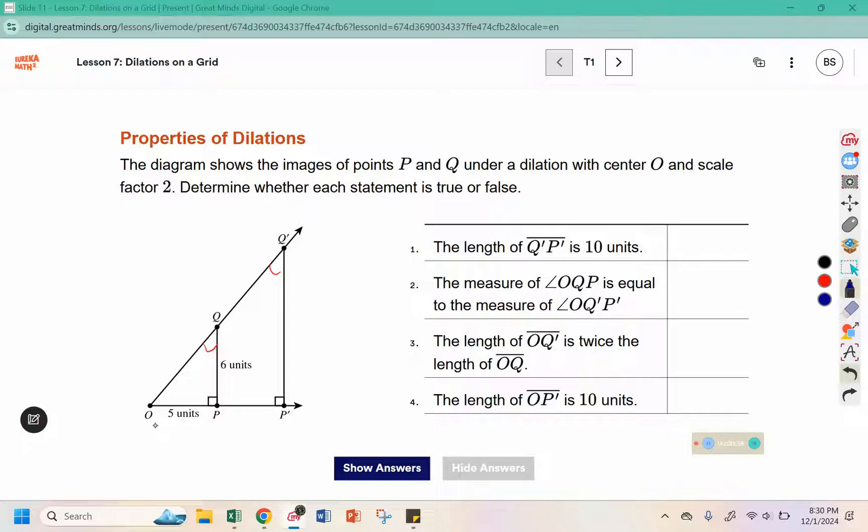The length of OQ prime is twice the length of OQ, or the length of OP prime is 10 units, this distance here. Indicate which ones are true and which ones are false.